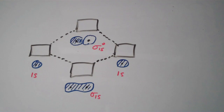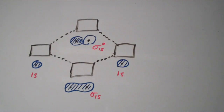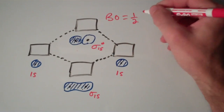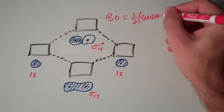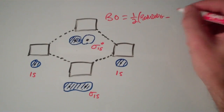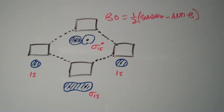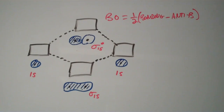A number we use to keep tabs on how many electrons are in bonding orbitals versus how many are in antibonding molecular orbitals is called bond order. Bond order is defined as one half of the number of electrons in bonding molecular orbitals minus the number of electrons in antibonding orbitals. A positive bond order means the molecule has electrons predominantly in bonding molecular orbitals, making it relatively stable. A zero or negative bond order usually means the molecule is not stable and the majority of its electrons are in a state of higher energy.